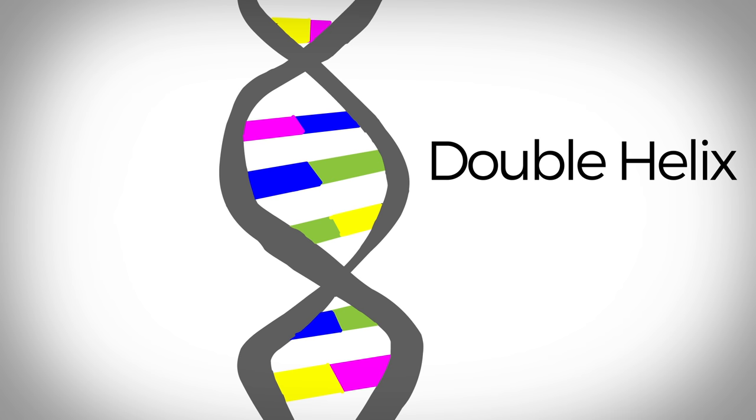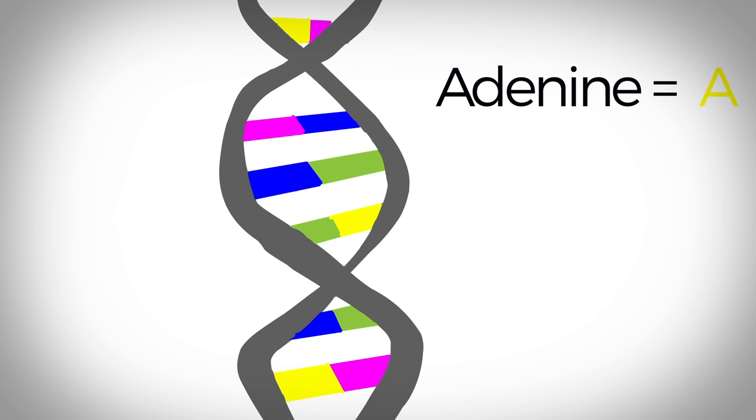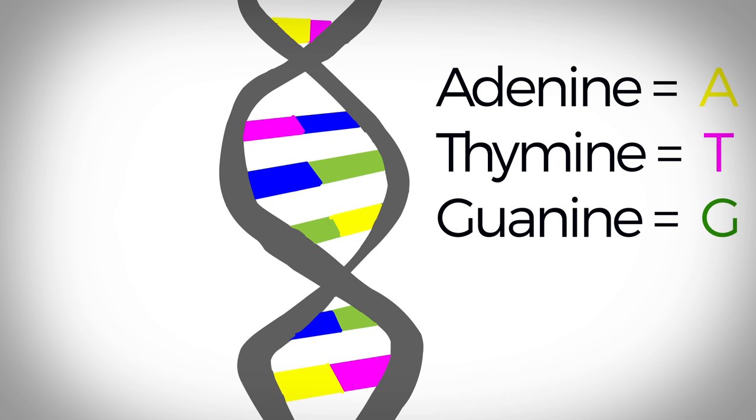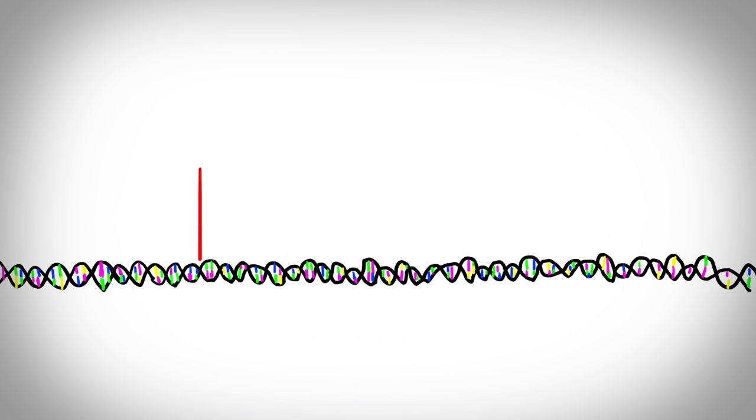The steps of the ladder are made of four bases. Adenine is A, thymine is T, guanine is G, and cytosine is C. A stretch of the DNA is called a gene.